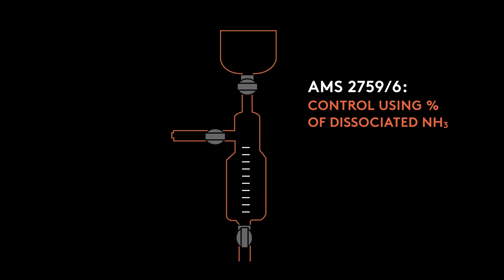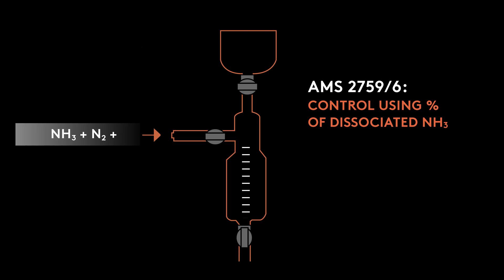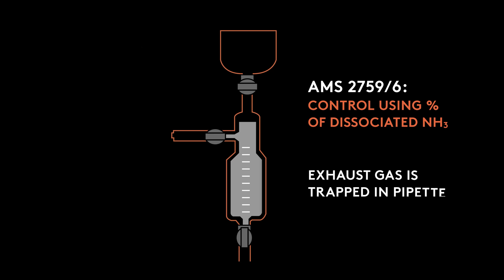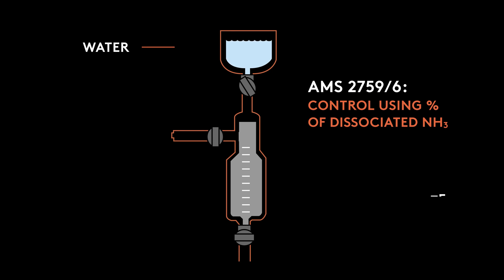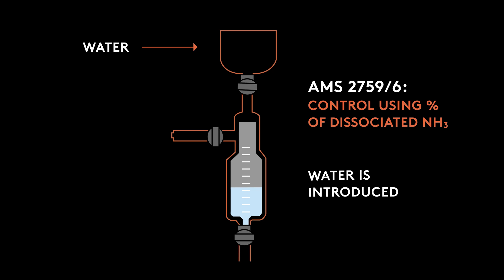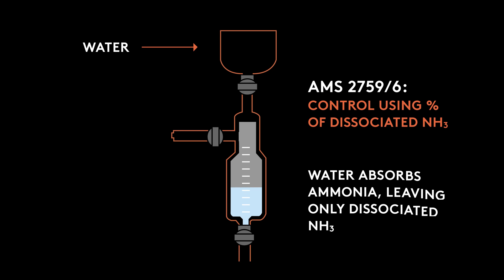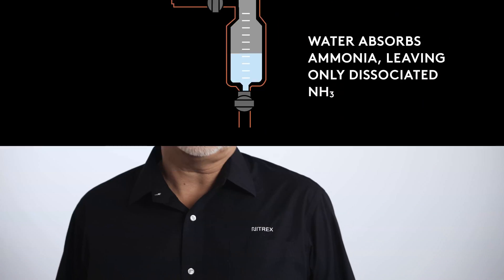Early specifications such as AMS 2759-6 define control using the percentage of dissociated ammonia. Technologically it is an easy method — the exhaust gas is trapped in a glass pipette or burette. As water is introduced in the pipette, it absorbs ammonia, leaving only dissociated ammonia composed of hydrogen and nitrogen.